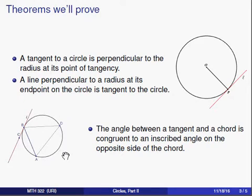is congruent to the inscribed angle that is spanned by that chord. So the angle D in this picture is congruent to the angle ABC, and we'll show that that always happens.